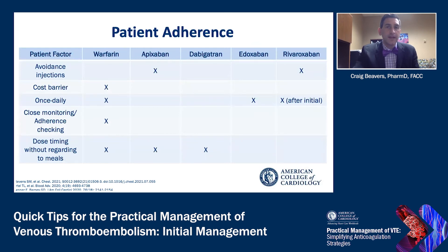Finally, the last P is patient adherence — considering agents based on patient preference. If they prefer once-daily therapy, warfarin or edoxaban could be considered. If they want to avoid injections, apixaban or rivaroxaban are options. If monitoring or adherence checks are a concern, warfarin is ideal because we have the INR. For simplified dosing without complex titration, apixaban, dabigatran, and warfarin are agents of choice.